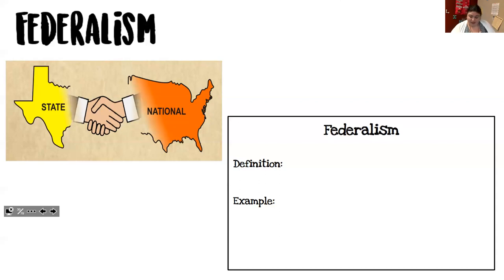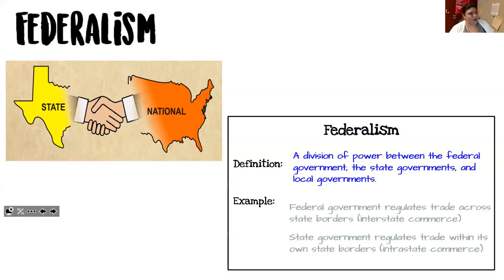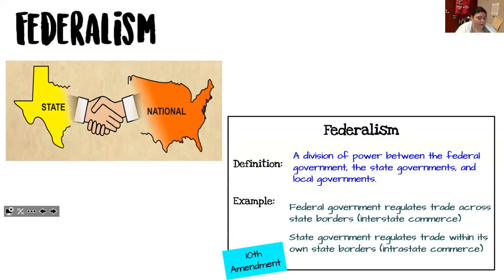Federalism is a division of power between the federal government, the state government, and the local governments. An example of this would be the federal government regulates trade across state borders. Basically, each state has their own GDP — gross domestic product — and each state is able to make money off this, such as through taxes and looking at what they can trade with other states, along with other countries.